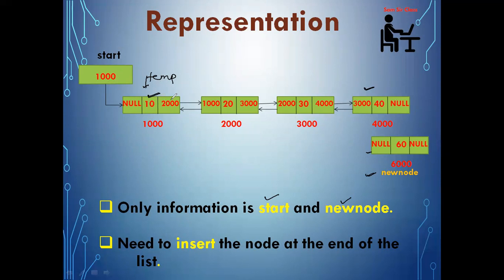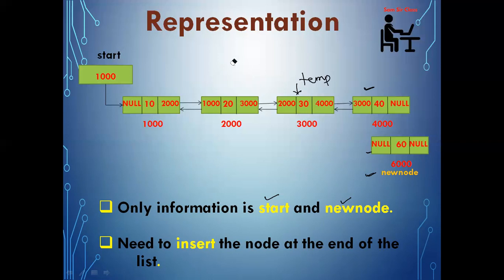We check if temp->next is not equal to null — if true, temp is shifted to the next node. We keep repeating this check. Now temp is pointing to address 4000. We check again: temp->next is not equal to null is false, which means temp is now pointing to the last node of the list.